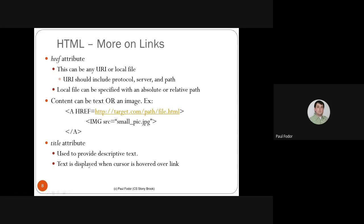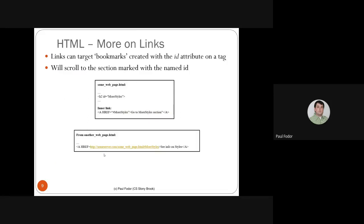The content within an anchor can be text or an image — if an image is used as link content, clicking it will navigate to the target. There is also a title attribute which provides descriptive text that appears when you hover the cursor over the link, so even if the path contains random characters you can still see what that link leads to.